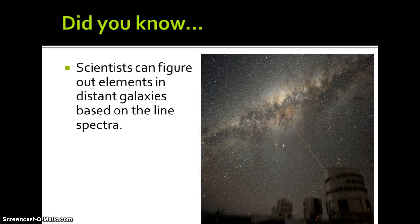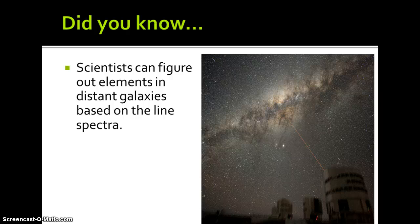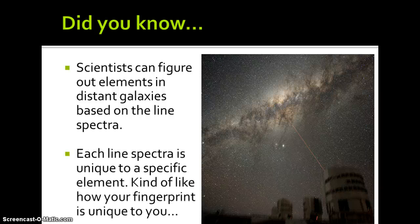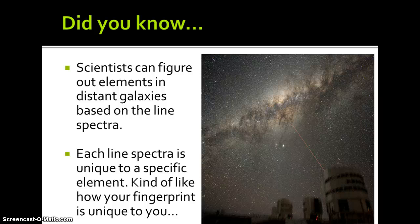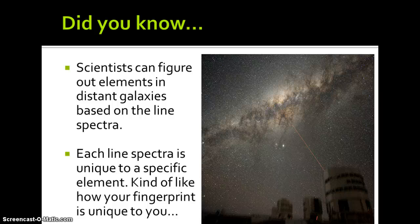Did you know? Scientists can figure out elements in distant galaxies based on the line spectra. Each line spectra is unique to a specific element, kind of like how your fingerprint is unique to you. A line spectra is unique to a specific element.